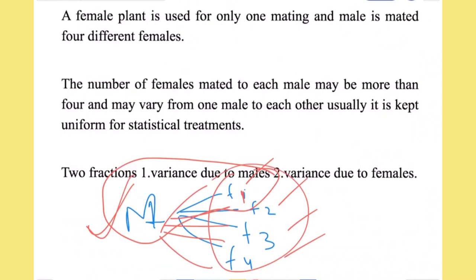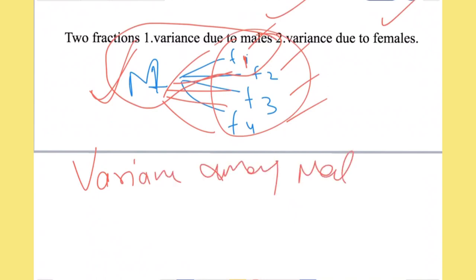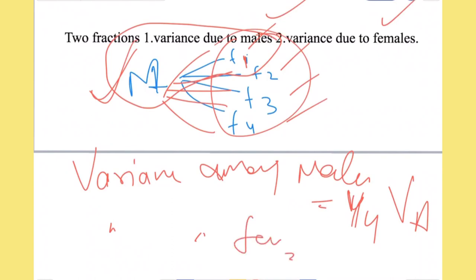In NCD1, two variance fractions occur: variance due to male and variance due to female. The variance among males is equal to one-fourth of the additive variance.